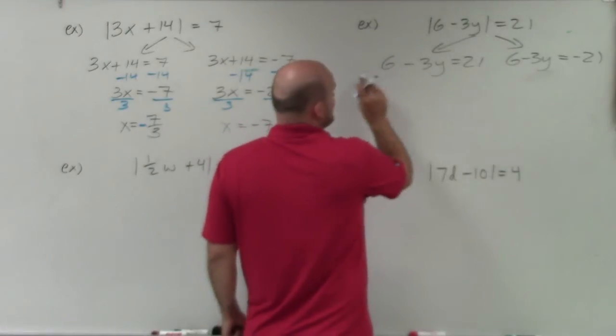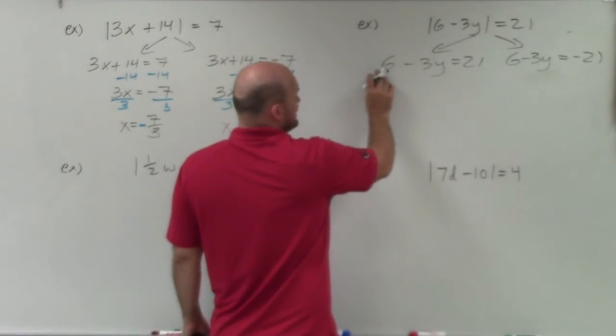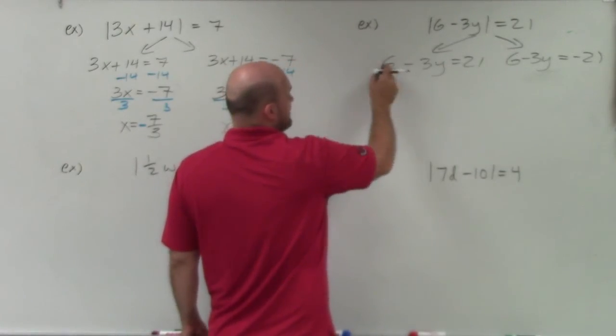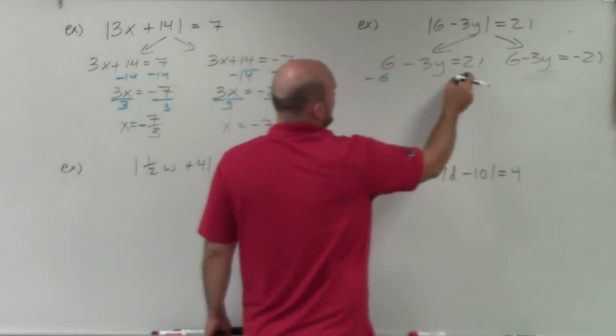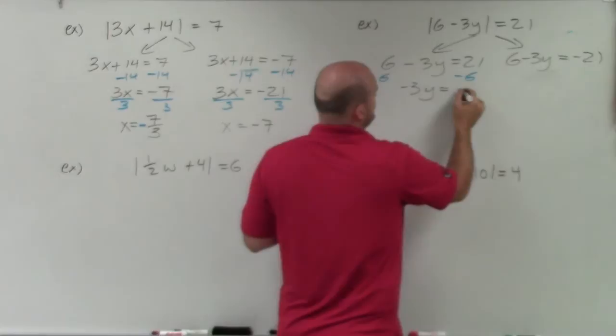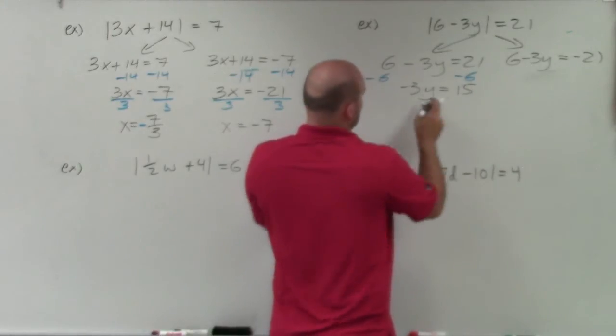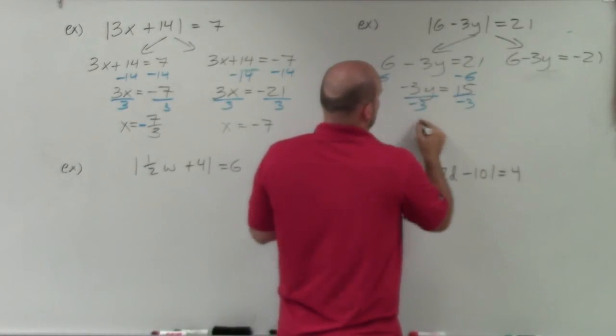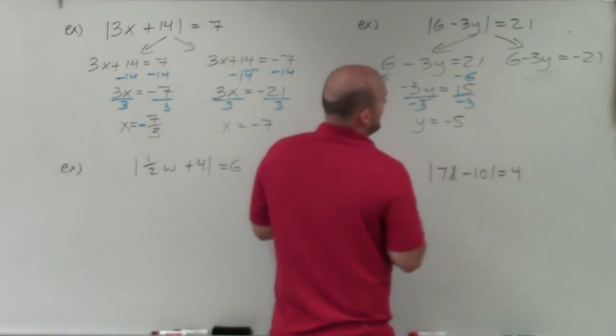Then you use your inverse operations. You can see that on my 6, that's being added to my y because that's positive 6. To undo that, I need to subtract 6. Therefore, I have negative 3y equals positive 15. Divide by negative 3, divide by negative 3. y equals negative 5.